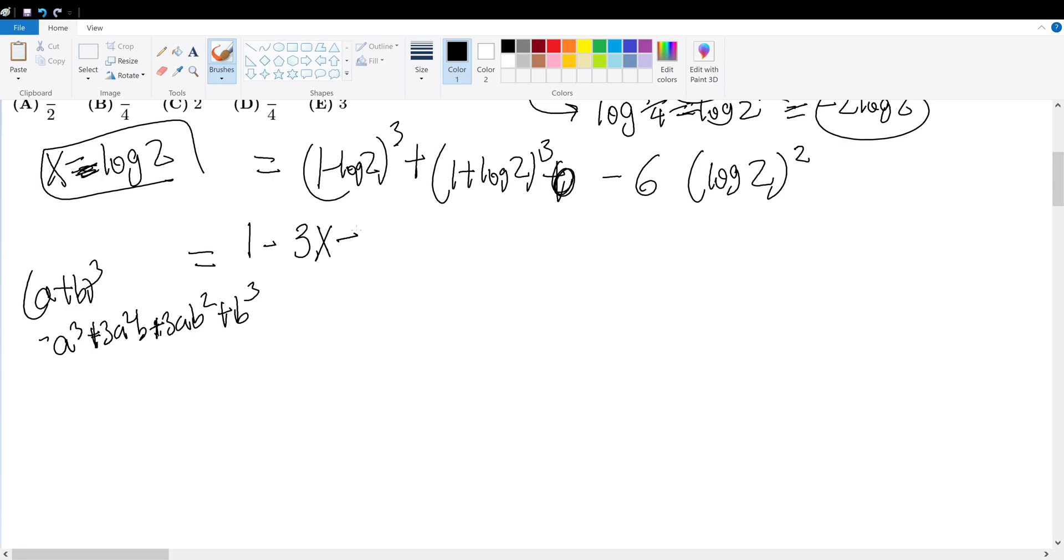1 minus 3 X plus 3 X squared minus X cubed plus 1 plus 3 X plus 3 X squared plus X cubed minus 6 X squared.